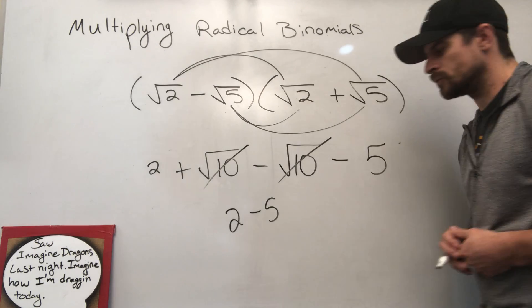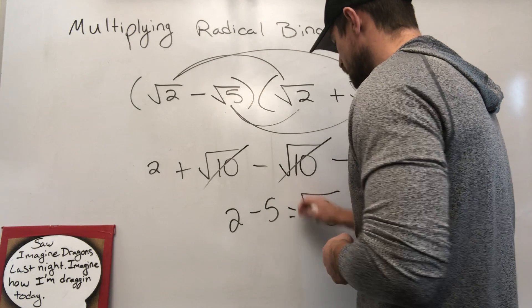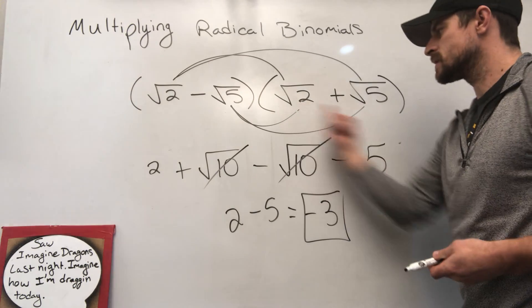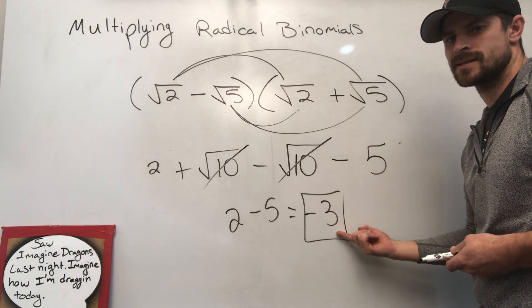And hopefully we all know 2 minus 5 is equal to negative 3. So taking all of this and simplifying it down to a constant of negative 3.